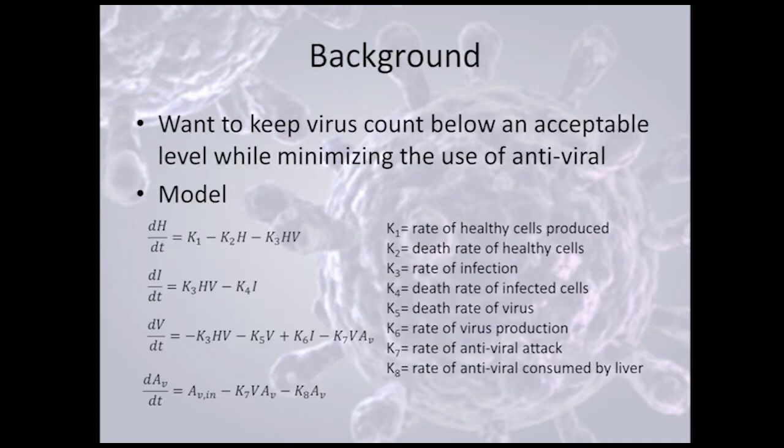First, a little bit of background. We wanted to keep the virus count below an acceptable level while minimizing the use of antiviral. We used equations for the healthy cells, infected cells, viral cells, and the antiviral count. There's a series of rates associated with these equations, but we wanted to draw your attention to the last one that we added, which is the rate of antiviral consumed by the liver. That's included in the last term of the antiviral equation, and we figured this would produce a more accurate system.